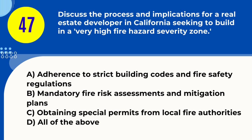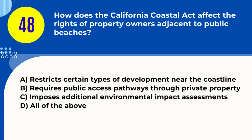Question 47. Discuss the process and implications for a real estate developer in California seeking to build in a very high fire hazard severity zone. A. Adherence to strict building codes and fire safety regulations B. Mandatory fire risk assessments and mitigation plans C. Obtaining special permits from local fire authorities D. All of the above. Answer: D. All of the above. Explanation: Developing in a high fire hazard zone requires strict code compliance, fire risk assessments, mitigation plans, and special permits.